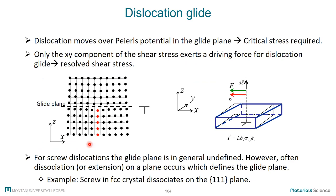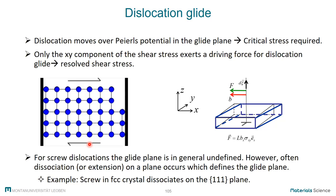When I apply a stress I can drive a dislocation, and it has to move over the Peierls potential in the glide plane. We have seen with the Peierls-Nabarro model that one can estimate this Peierls potential as a sinusoidal variation, and a critical stress is needed to overcome this periodic variation. This is the lattice friction which must be overcome.